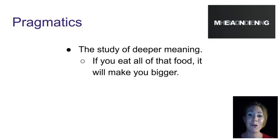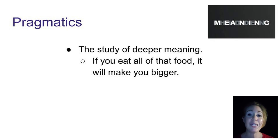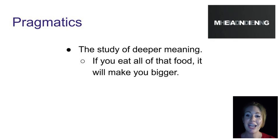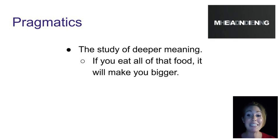In pragmatics, we study deeper meaning or even hidden meaning. This is different than semantics in that the meaning of the speaker is beyond the word level and hidden in context. Let's take the following sentence as an example: 'If you eat all of that food, it will make you bigger.' Semantically, 'bigger' in this sentence would mean larger than you are currently. But think about how this sentence would mean something different depending on the context. If you said it to a young child, pragmatically it would mean to grow bigger, which is something we want our children to do. However, if you said the same sentence to a grown person who is worried about their weight, it would mean something entirely different and most likely be considered very rude.